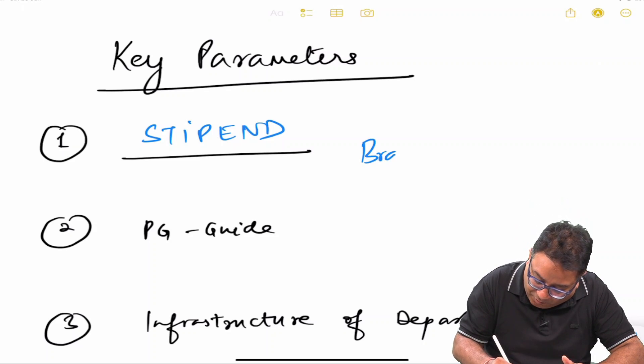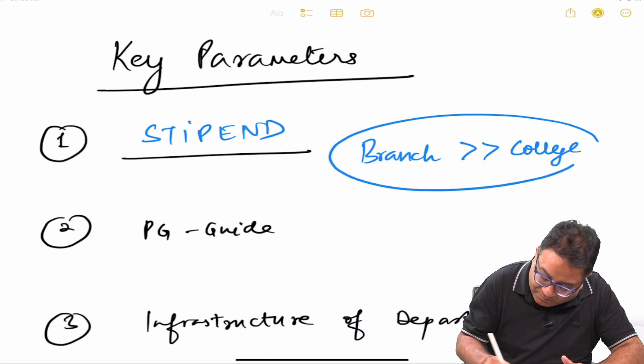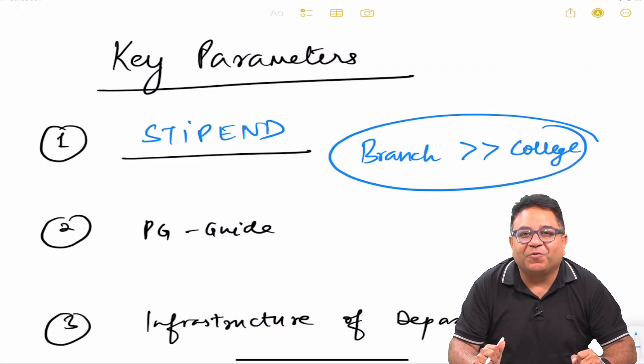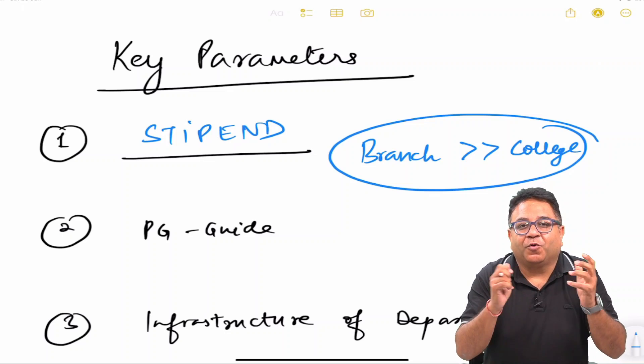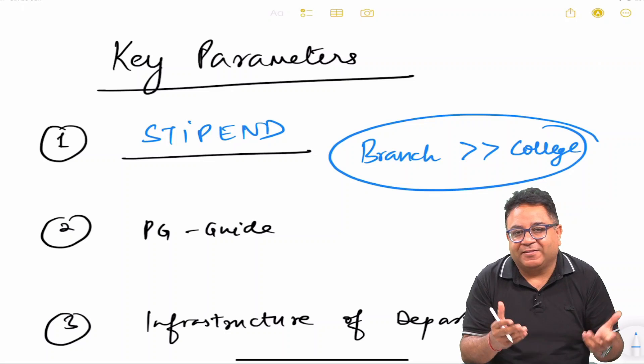But definitely, another thing which matters along with the stipend is I always say choose your branch over college. So there has to be some balance which you have to make in this regard. Good branch getting in a good college with a good stipend is a win-win situation.